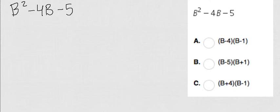Welcome back. So we have this problem, b squared minus 4b minus 5. How do I factor?